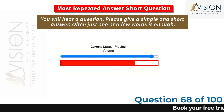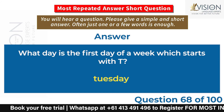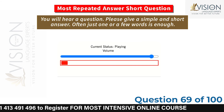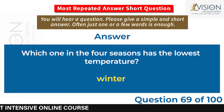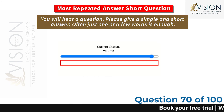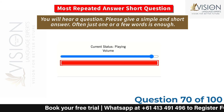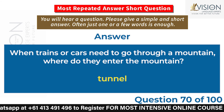What day of the week starts with T and is the first such day? Tuesday. Which of the four seasons has the lowest temperature? Winter. When trains or cars need to go through a mountain, where do they enter? Tunnel.